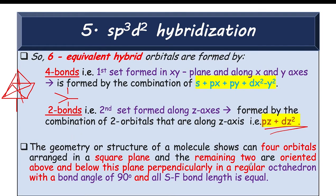Square plane and remaining 2 are oriented above and below this plane perpendicular to the regular octahedron with the bond angle of 90°.